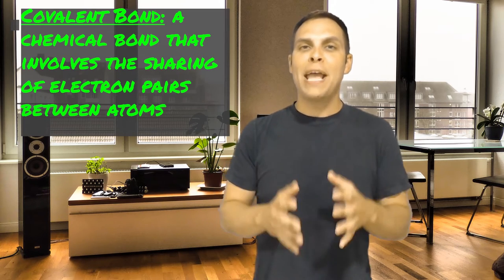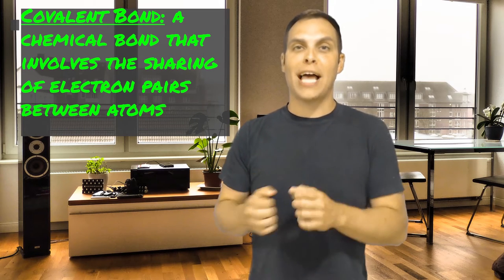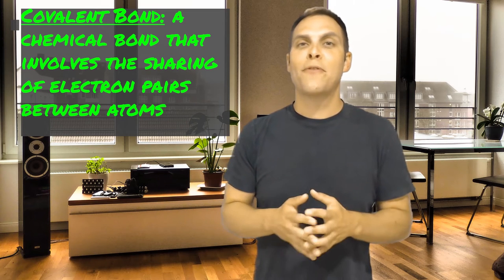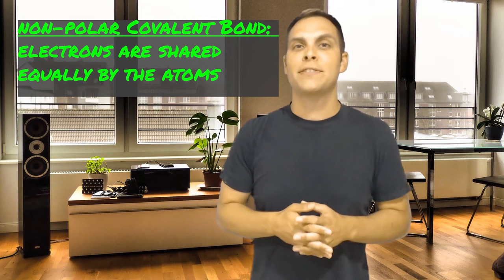So the first thing we'll talk about is what we call a covalent bond. A covalent bond occurs when two atoms or two or more atoms share electrons. So the first type of covalent bond we'll talk about is called a non-polar covalent bond. A great example of this is carbon dioxide. If you look at carbon dioxide, it has very intermediate electronegativity. It neither wants electrons very badly, nor does it wish to give them away. Oxygen is pretty much right next to it on the periodic table. It has slightly more electronegativity, but not that bad.